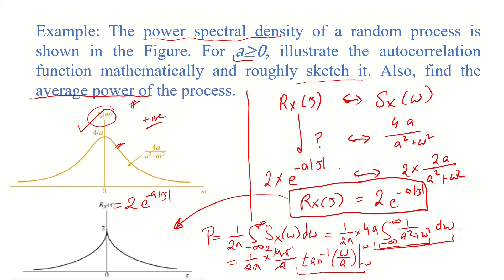Based on this range from minus infinity to infinity, tan inverse of omega by a would simply be in terms of π by 2. So this would lead to 2 by π times π by 2 plus π by 2, and hence this is simply 2. That is, the average power of this process is 2.